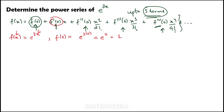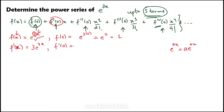Then I have to find f'(0). For that I need f'(x). I have to differentiate e^(3x). The formula is: differentiation of e^(ax) = a·e^(ax). Here a = 3, so f'(x) = 3e^(3x). Therefore f'(0) = 3·e^(3×0) = 3·e^0 = 3.